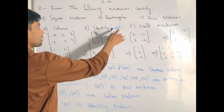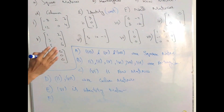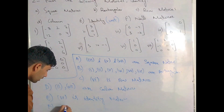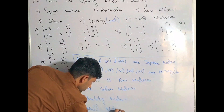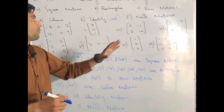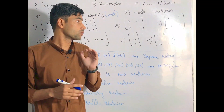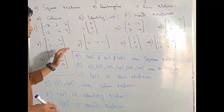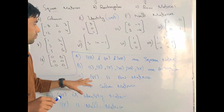Then we will get part F: the null matrix. The null matrix is defined as a matrix where all elements are only zero. You should remember this definition carefully — write it down on paper so you can easily recall it when answering questions.